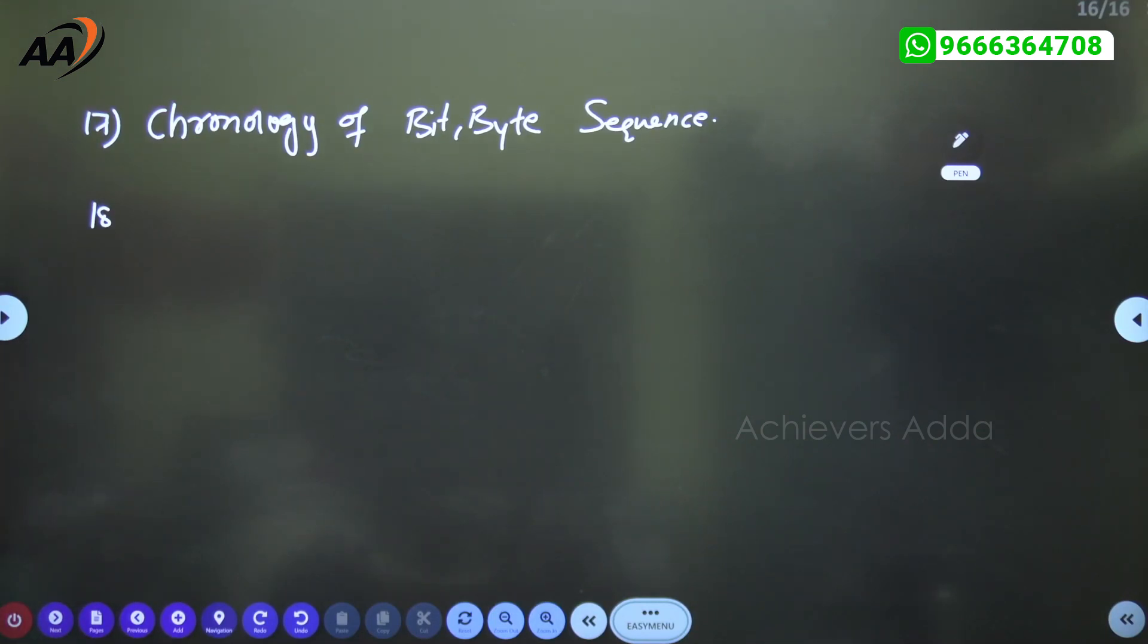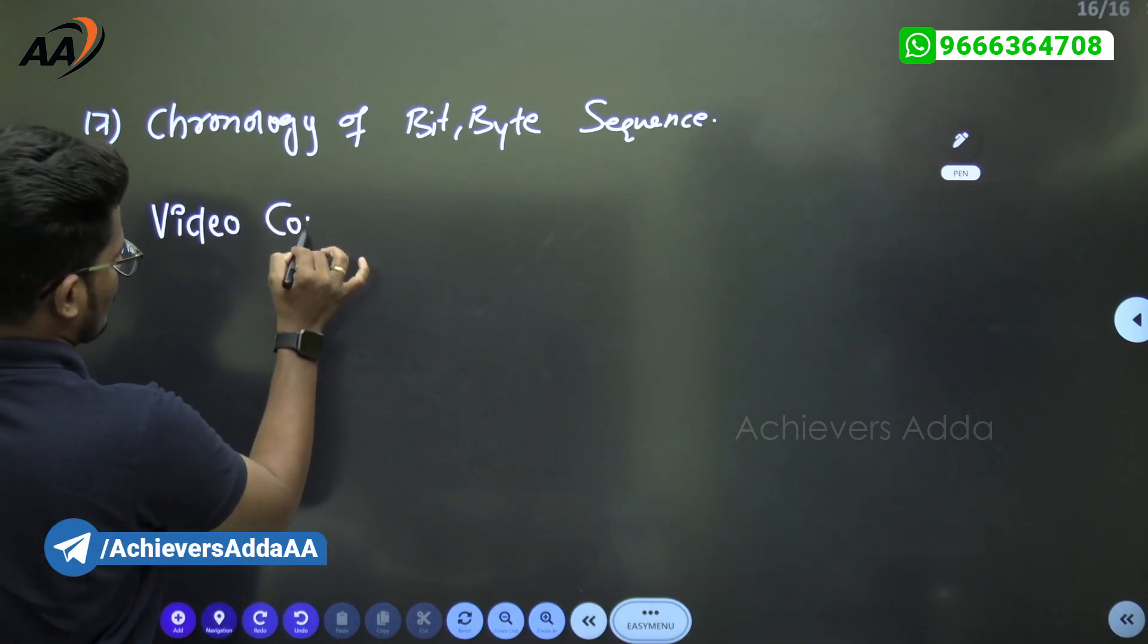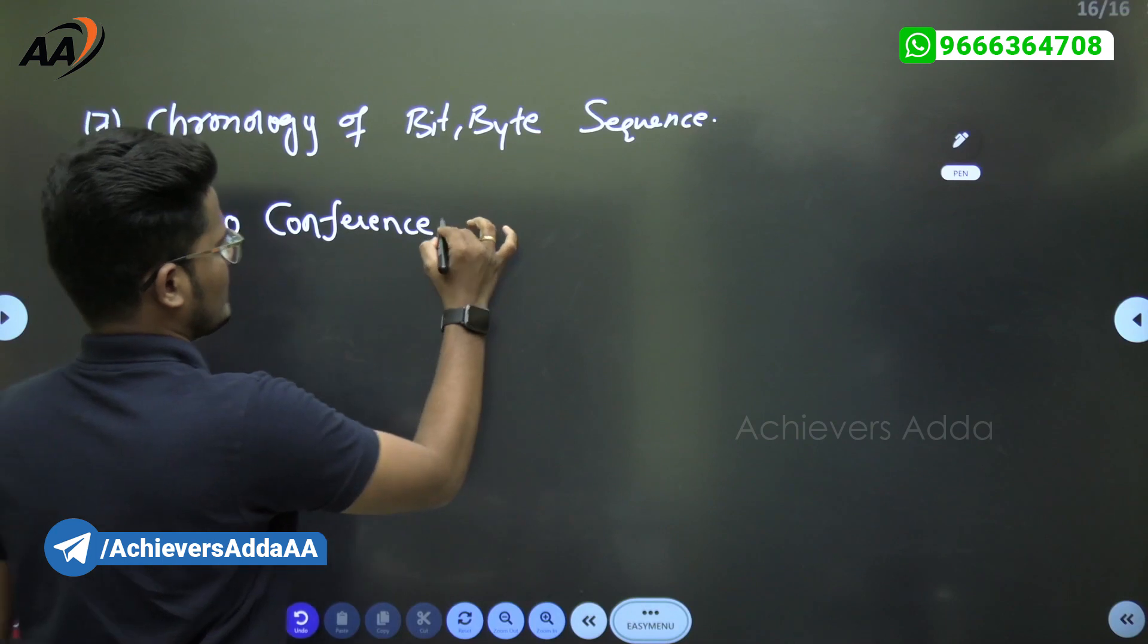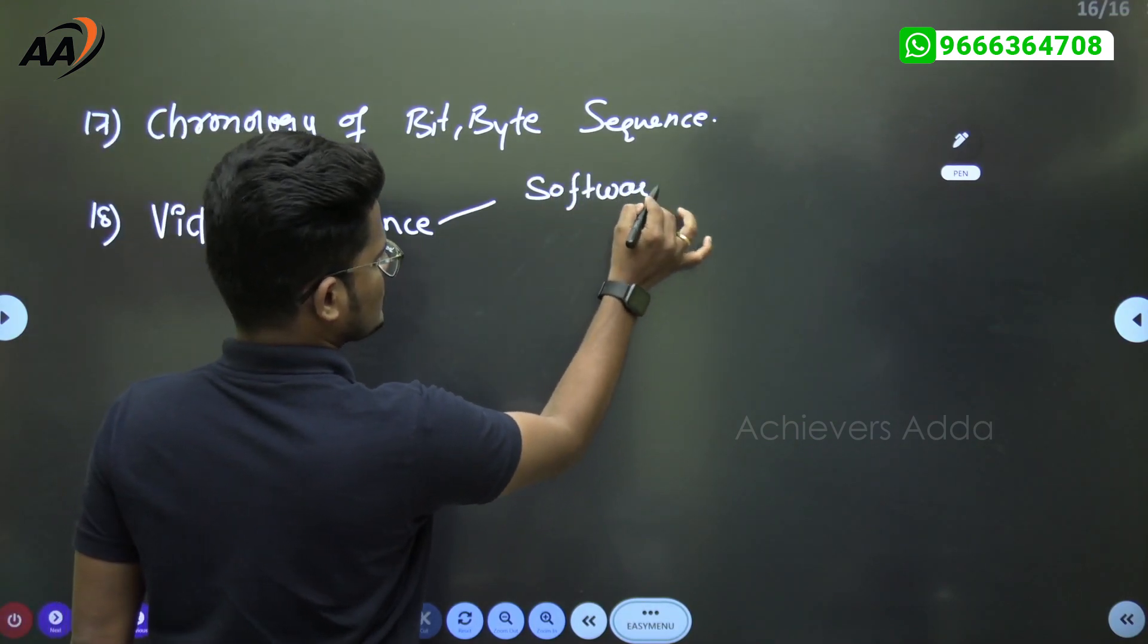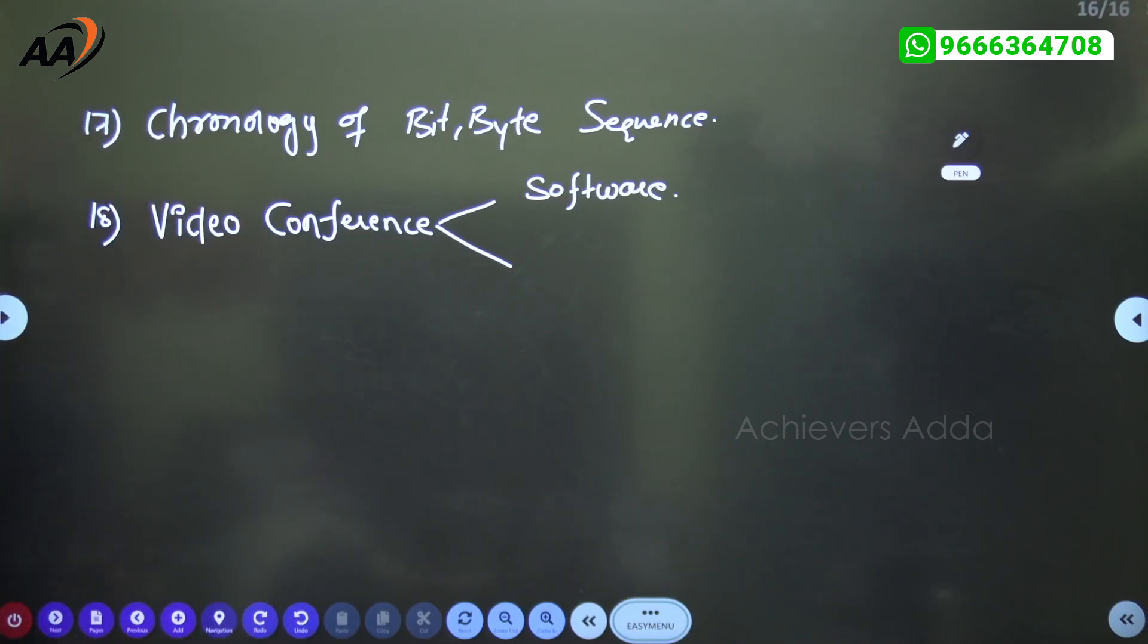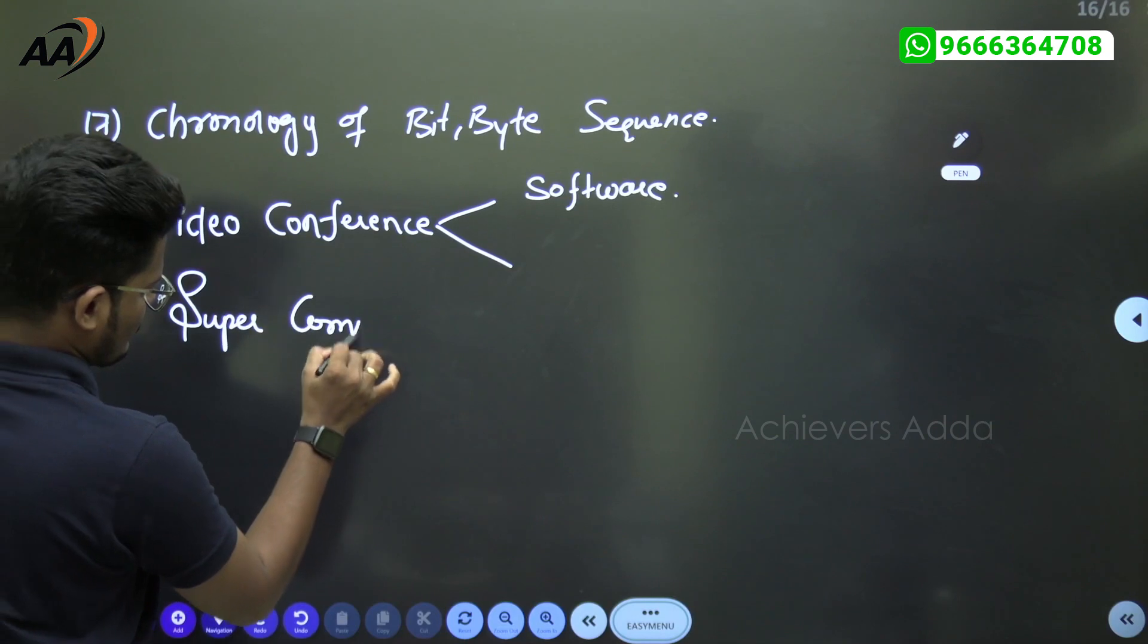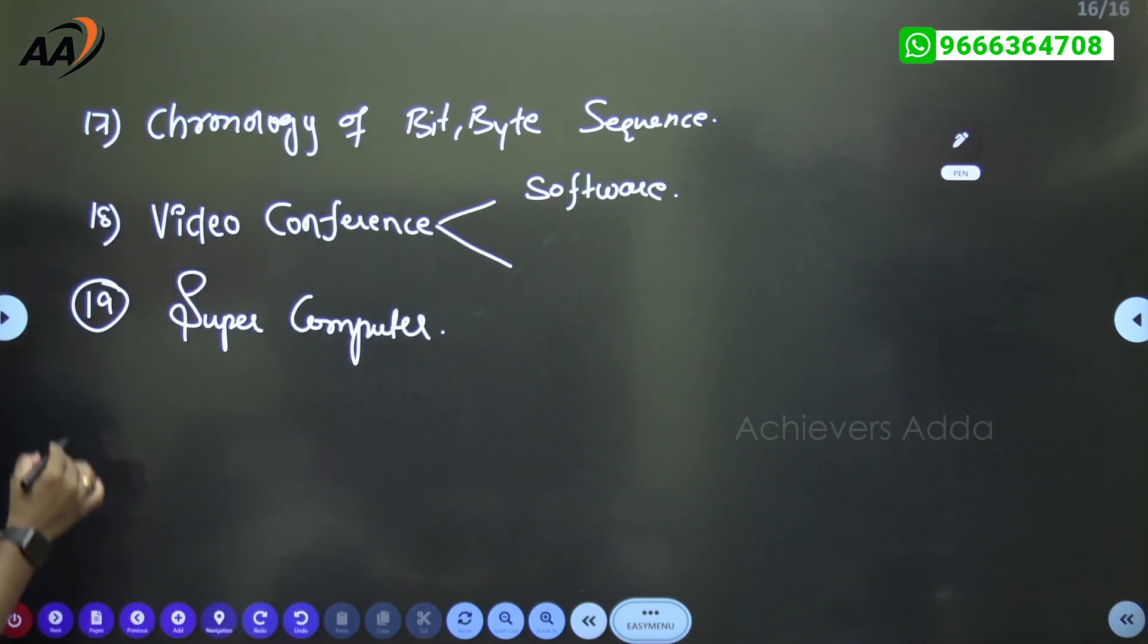18th one is video conference related question. This could be like video conference related software - previously Zoom and all. There is a situation given related to video conference and what types of software will be used. Here, next one is supercomputer related question has been asked.